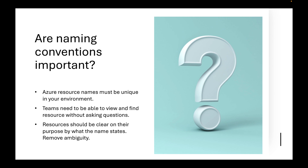Naming conventions remove ambiguity. I remember encountering a client where resource group names and virtual machine names didn't make sense. When you look at your Azure resources, you should be able to say: I understand exactly what this resource is for, whether it's for dev, test, etc. That's how your naming convention should be displayed.